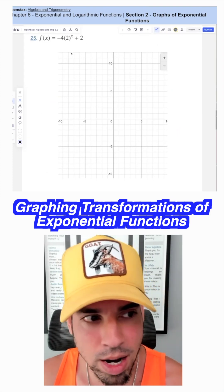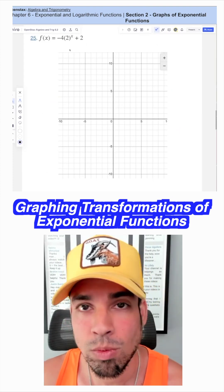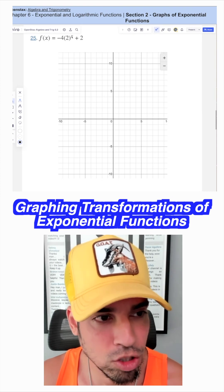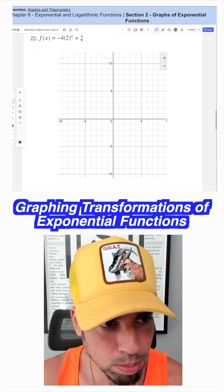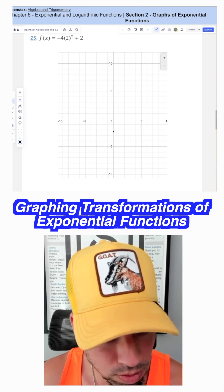So for this one, what we're going to do is we're going to start by graphing it here. And we're going to start with that nice y-intercept. So I'm going to plug in 0 for x. I get 2 to the 0th is 1 times negative 4 is negative 4 plus 2 is negative 2. So we have 0, negative 2.